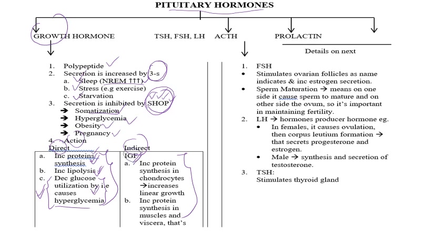Through insulin-like growth factor (IGF), growth hormone increases protein synthesis in chondrocytes, which leads to linear growth. In cartilage and chondrocyte cells, increased protein synthesis leads to increased mineralization, bone formation, and increase in linear growth. It also increases protein synthesis in muscles and viscera — confirming it is an anabolic hormone. However, if there is excessive growth hormone, accumulation in viscera may result in a big tongue and enlarged organs, which are the main clinical problems in these patients.